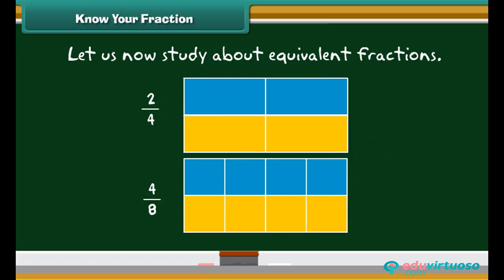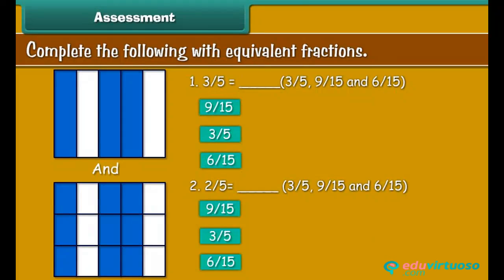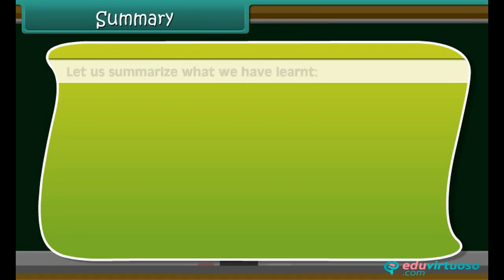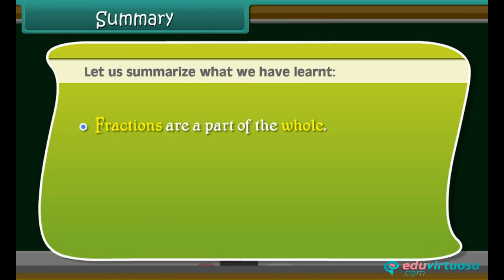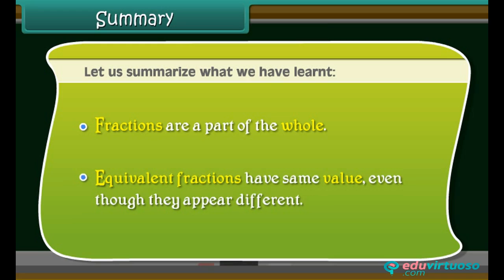This means two by four must be the same as four by eight, so two by four and four by eight are equivalent fractions. Complete the following with equivalent fractions. Summary: fractions are part of the whole. Equivalent fractions have the same value even though they appear different.